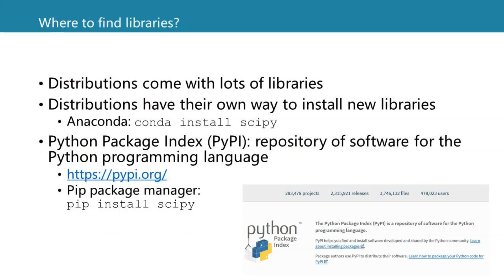So where can you find these libraries? Libraries come with distributions, and distributions have their own way to install new libraries. You can find an overview of many libraries in the Python Package Index, which is a repository of software for the Python programming language containing many projects. You can also install Python packages using a package manager, and the most famous one is pip.